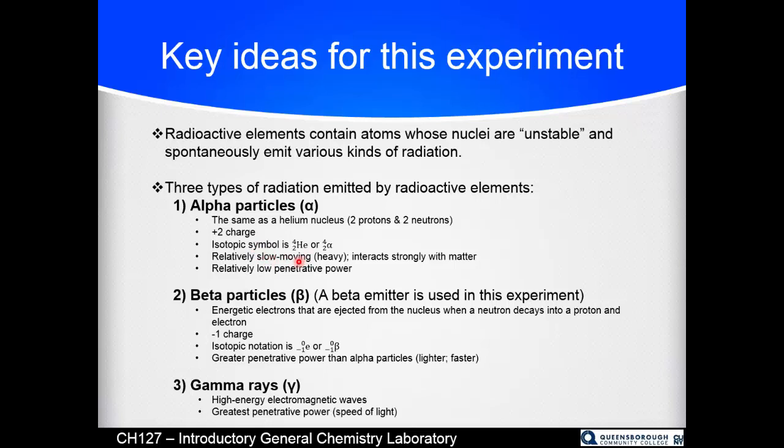And therefore it moves slowly because the rule is lighter is faster. Since it is slow moving and highly charged at plus two charge compared to the other particles, minus one charge or no charge, it interacts strongly with matter chemically. Having that plus two charge, it'll rip electrons off of other things. It will oxidize other things very easily. It's so heavy it moves slowly. It will have time to interact chemically with the things that is passing through. And therefore it has relatively low penetrative power.